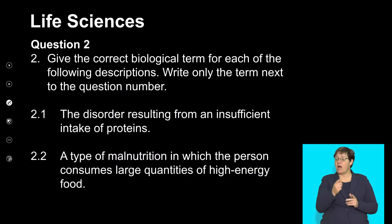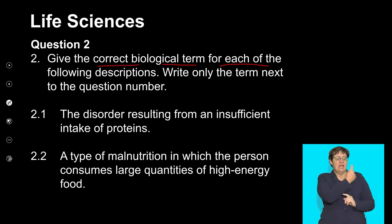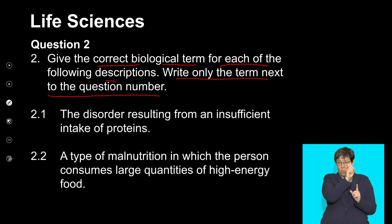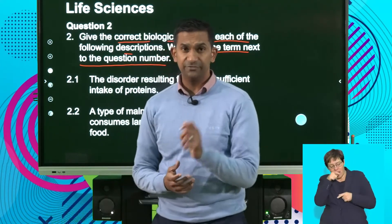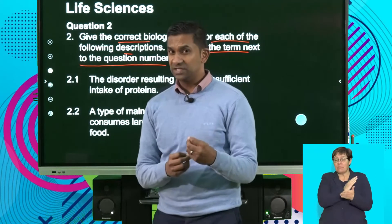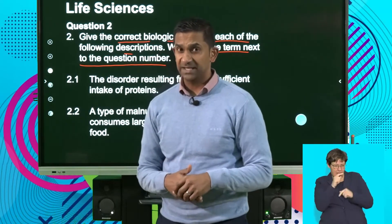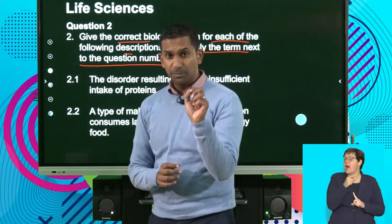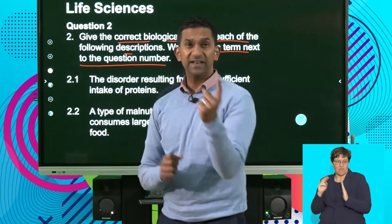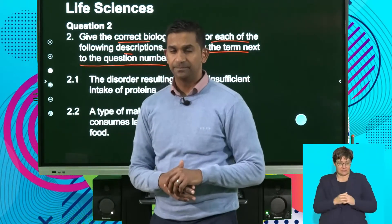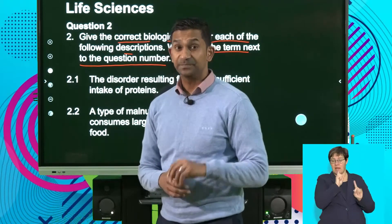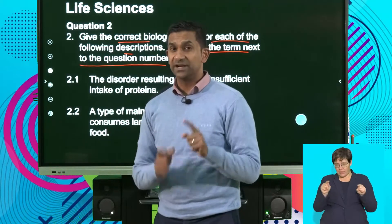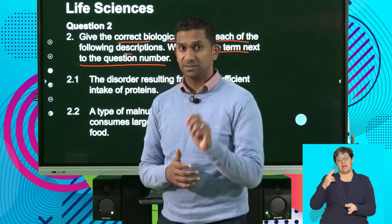Give the correct biological terms for each of the following descriptions — write only the term next to the question numbers. It's important that when you have to write down terms, you read through the descriptions carefully. Often in confusing questions there might be two or three similar terms, so if you're clear on understanding the key components of a description, you can reflect on your list of terms and find the correct one. If in doubt, write down both options and reflect before finalizing your answer.